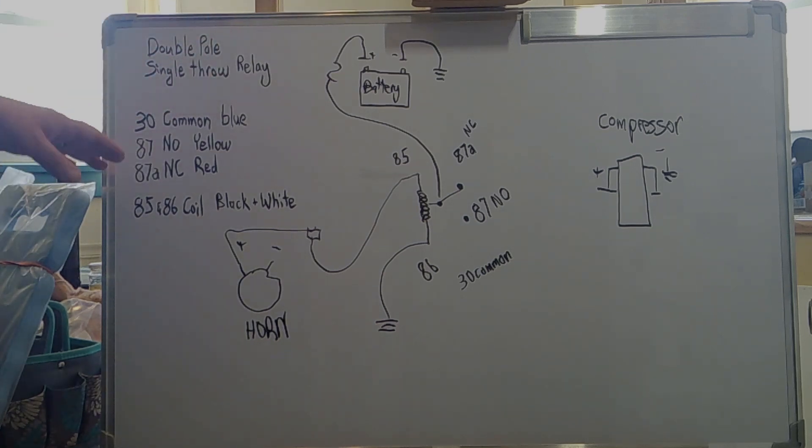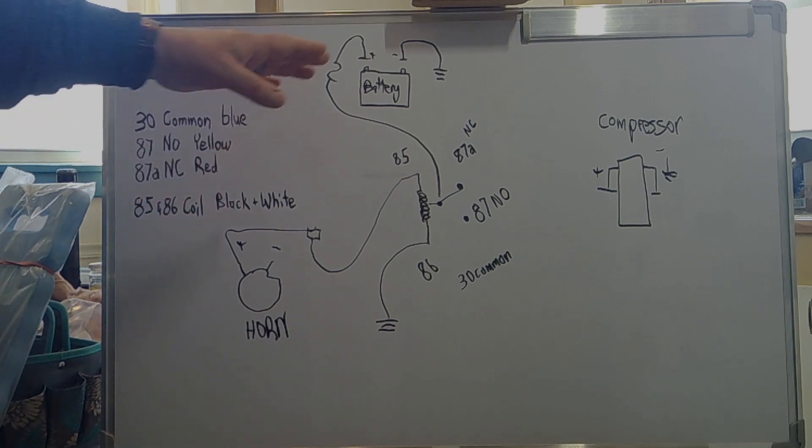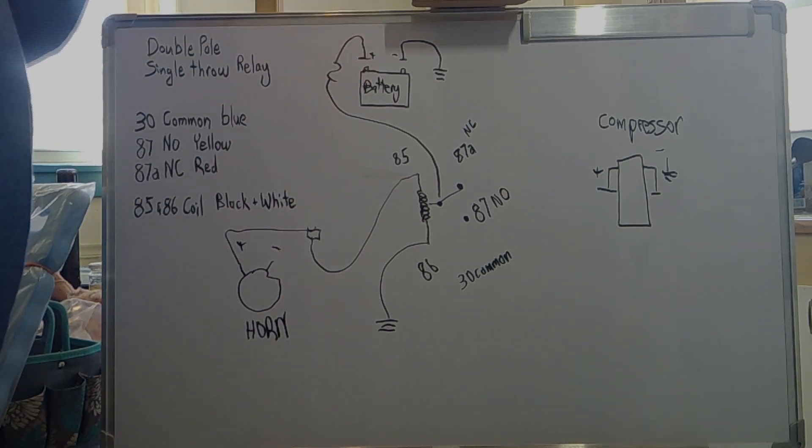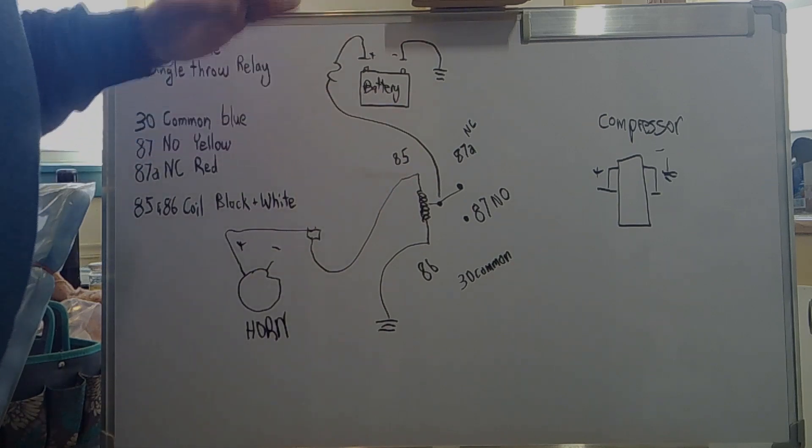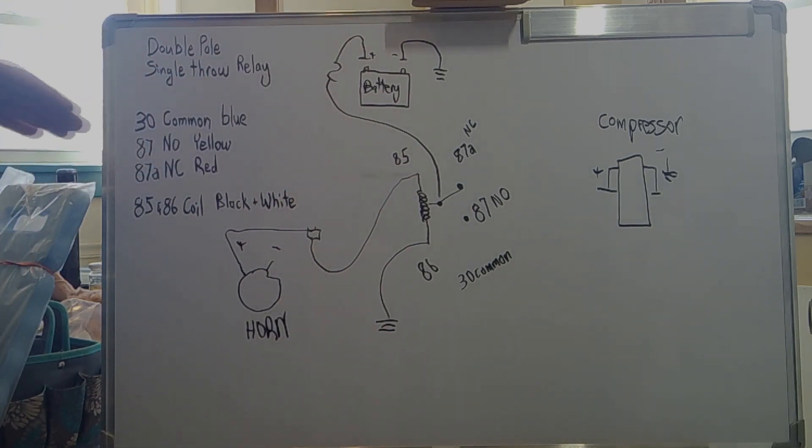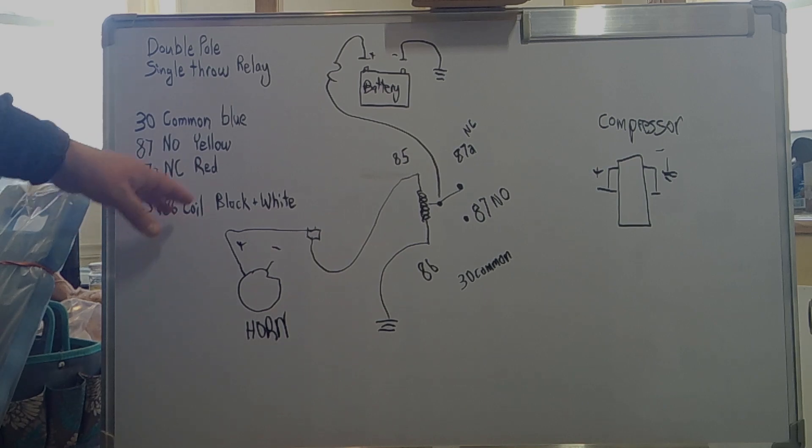87A is your normally closed, the red. That would be something that's on unless the coil is activated. Then it opens it and shuts it down. Then 85 and 86 are your black and white wires which operate the coil.